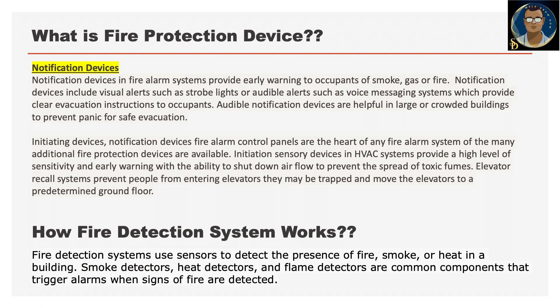Notification devices in fire alarm systems provide early warning to occupants of smoke, gas or fire. Notification devices include visual alerts such as strobe lights, and audible alerts such as voice messaging systems which provide clear evacuation instructions to the occupants. Audible notification devices are helpful in large and crowded buildings to prevent panic during safe evacuation.